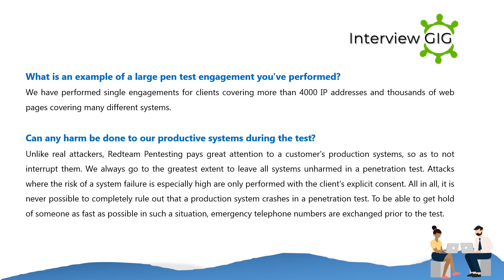Unlike real attackers, Red Team Pen Testing pays great attention to a customer's production systems so as not to interrupt them. Every effort is made to leave all systems unharmed during a penetration test. Attacks where the risk of a system failure is especially high are only performed with the client's explicit consent. It is never possible to completely rule out risk in a production system penetration test, so emergency telephone numbers are exchanged prior to the test.